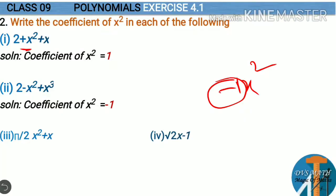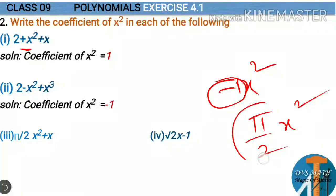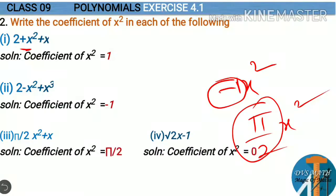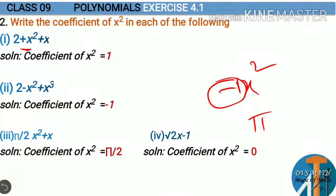Third expression: pi by 2 times x square plus x. Here we have pi by 2 multiplied to x square, so the coefficient of x square is pi by 2.